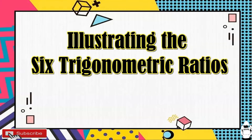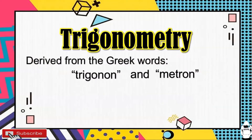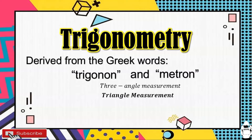Hi everyone, it's me Teacher J, and welcome to my channel. For today's video, we are going to focus on illustrating the six trigonometric ratios — sine, cosine, tangent, cosecant, secant, and cotangent. Before that, let's define first what trigonometry is. Trigonometry is derived from the Greek words 'trigon' and 'metron,' meaning three-angle measurement, or it's all about triangle measurement.